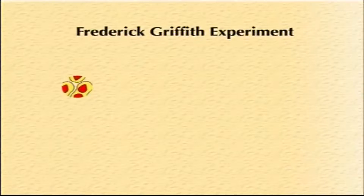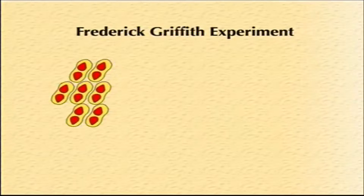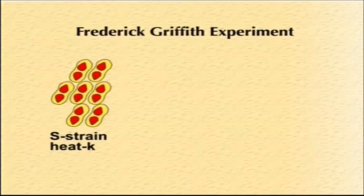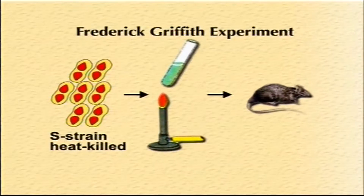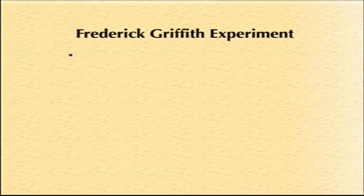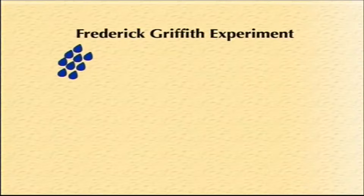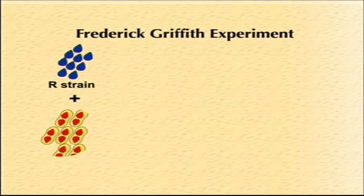When the mouse was injected with the R strain, the mouse survived. When injected with heat-killed S strain, the mouse survived again. However, a very important observation was that when the mouse was injected with a mixture of heat-killed S strain and live R strain, the mouse died.